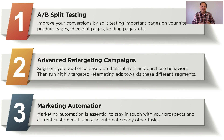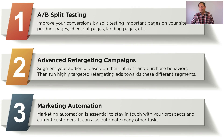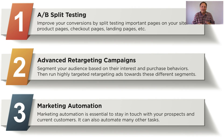A-B split testing is essential to improving your conversions on your website and you should be constantly running different experiments. Even after you find something that's working, don't stop there. Keep on running different experiments to help improve your conversions even further. You should be running these experiments on the most important pages on your site — your product pages, your checkout pages, and landing pages that you're sending paid traffic to from your paid advertising campaigns.